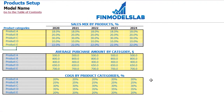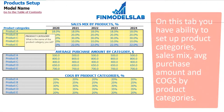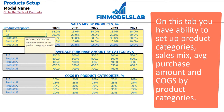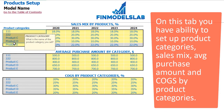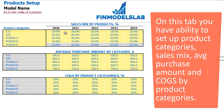On the products tab, you can input product category names like 111, 222, etc., any name you need. And you can set up the sales mix by products.